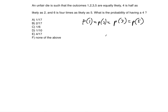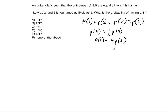The probability of four is half as likely as two, so P(4) = (1/2) · P(2). And the probability of six is four times as likely as five, so P(6) = 4 · P(5). What is the probability of four? That's what we're being asked.